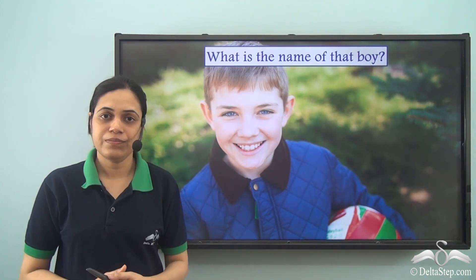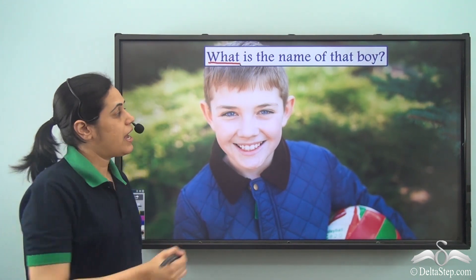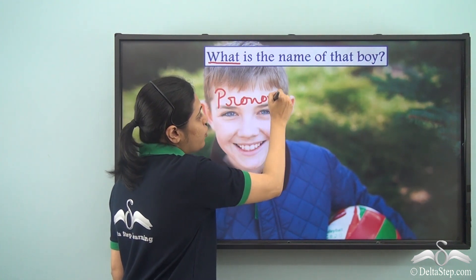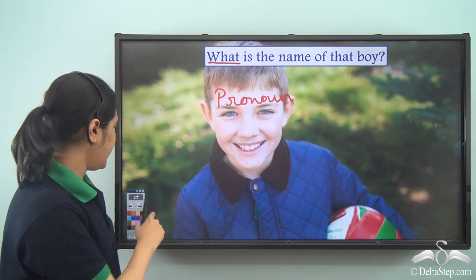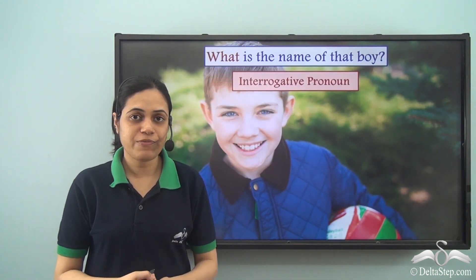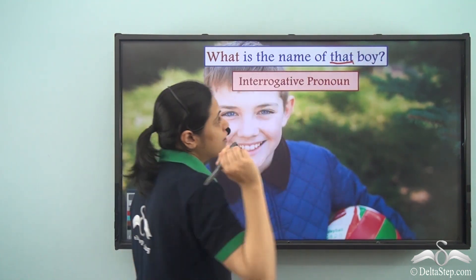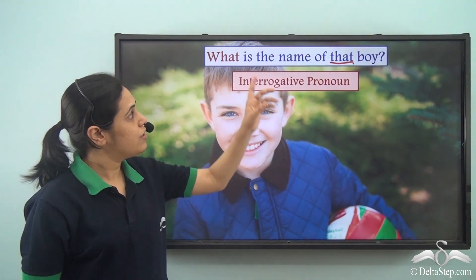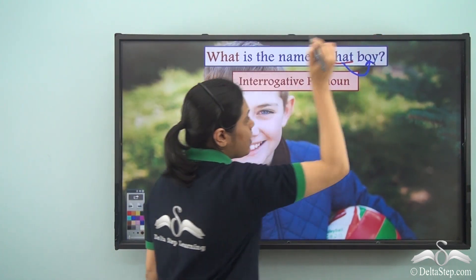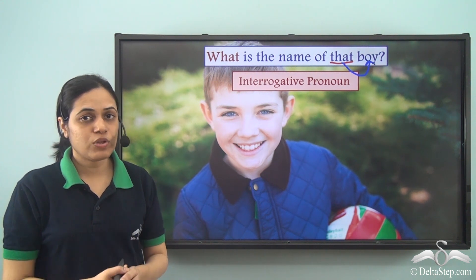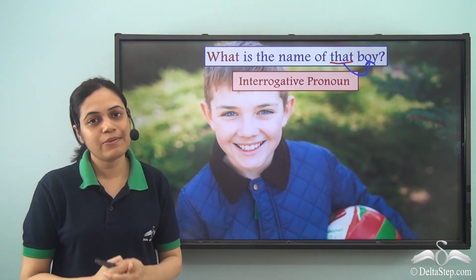'What is the name of that boy?' In this sentence, 'what' is a pronoun used for asking a question, so it is an interrogative pronoun. It might also appear that 'that' is a pronoun here, but if you look closely, 'that' is followed by the noun 'boy.' So 'that' is actually describing the noun 'boy' — it is a demonstrative adjective and not a demonstrative pronoun.